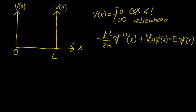The particle cannot exist outside the box because it cannot ever have energy high enough to climb over that infinite barrier. Given this, the idea is to find an expression for the wave function based on this condition. Since we're only interested in the wave function within the two boundaries zero and L, our Schrödinger equation is going to be rewritten for that domain.